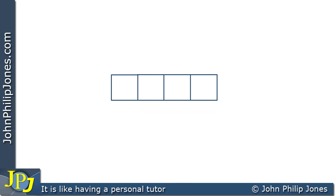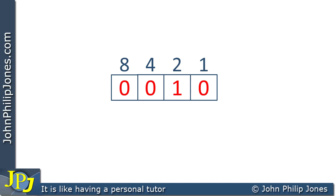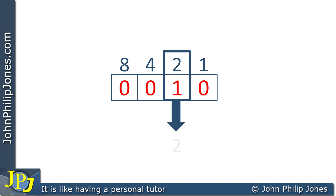Let's add the place values to the top of these flip-flops. Now let's place a nibble into these flip-flops. I can see straight away that this nibble has the value of two in our number system, because there is a one in the place value of two, so we write two here, which equals two.